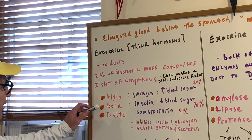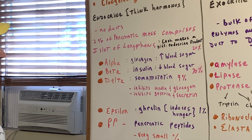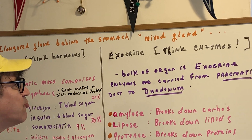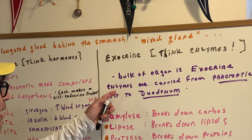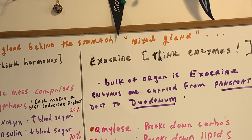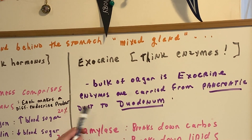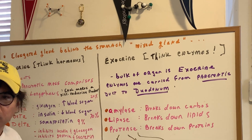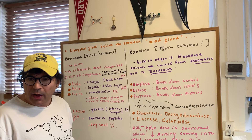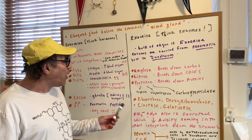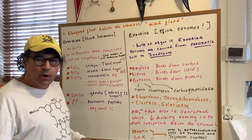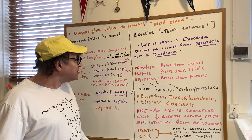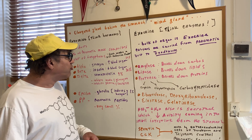For the DAT exam, the first three cell types are the most important. As far as exocrine goes, the bulk of the organ is exocrine and that makes the enzymes. If you look at the study notes, you'll see the long pancreatic duct that drains into the duodenum. There was also the common bile duct that drains into the duodenum, and they both join at the ampulla of Vater.